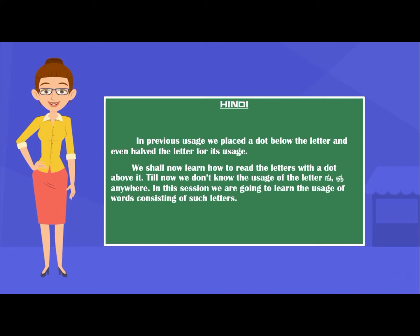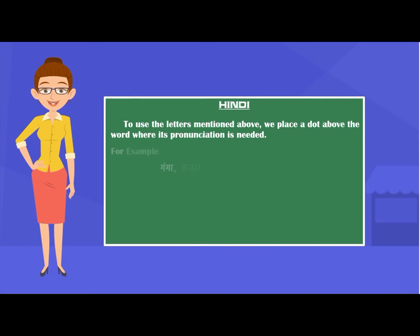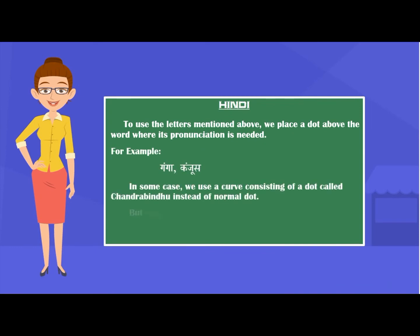Till now, we don't know the usage of the letters 'ing' anywhere. In this session, we are going to learn the usage of words consisting of such letters. To use the letter mentioned above, we place a dot above the word where its pronunciation is needed. For example, Ganga and Kanjus. In some cases, we use a curve with a dot called Chandra Bindu instead of a normal dot.